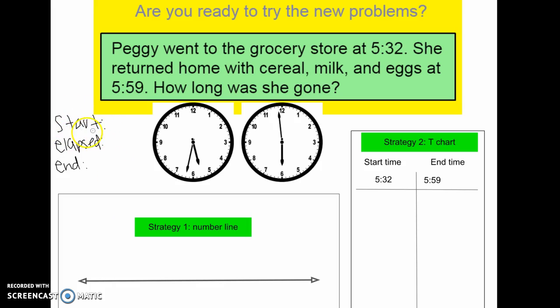Start time is if they give you what time something began. Elapsed time is the amount of time, minutes, or hours that have passed. And then end time is what time something ends.